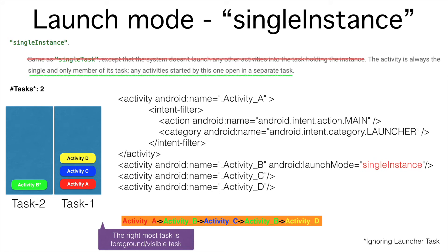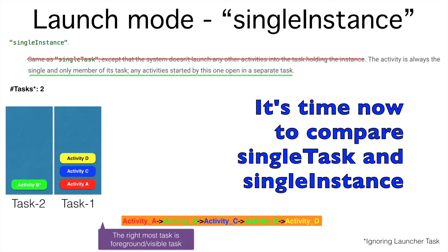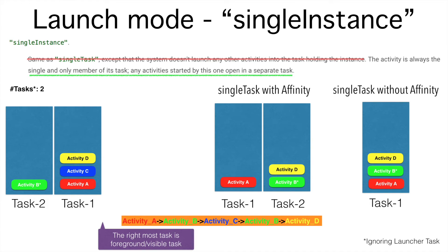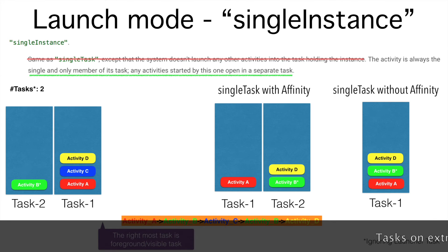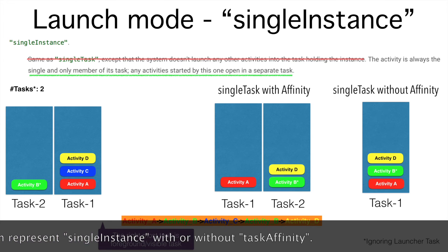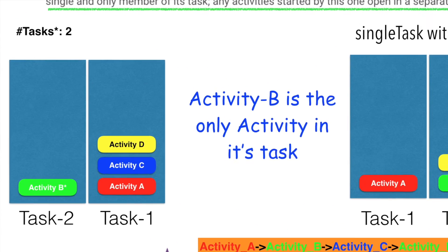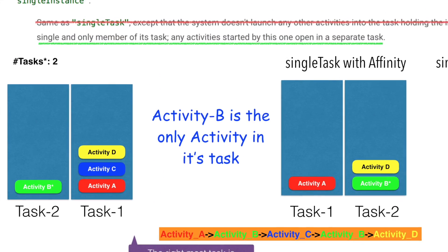Going back to the discussion: if I had done the same set of actions with single task — with affinity and without affinity — what would the difference be? In case of single task with affinity, this would be the final state of the task, and in case of single task without affinity, this would be the state. The difference is the way activities are arranged on top of activity B — there is an activity D on top of activity B in the same task. In single instance, activity B is the only activity in its task. That is the key difference between single task and single instance.